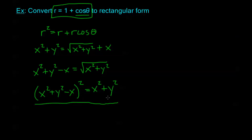In the next section we're going to start graphing some of these polar equations. We want just r on the left side and some expression of theta on the right. We get some pretty cool graphs when working with polar coordinates — so we'll see you in the next section.